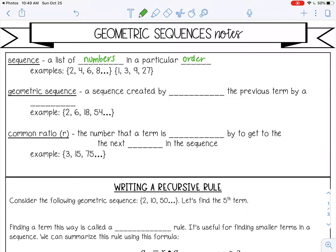A geometric sequence is a sequence created by multiplying the previous term by a constant. So 2, 6, 18, 54. I'm multiplying by 3 each time. Same thing right here. I'm multiplying by 3 each time. It doesn't have to be 3. It can be multiplying by any number.